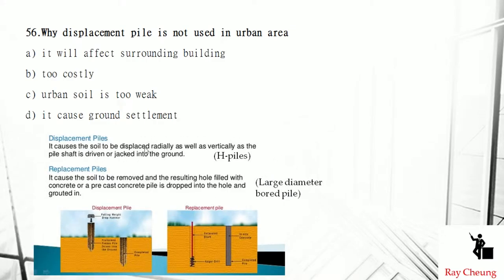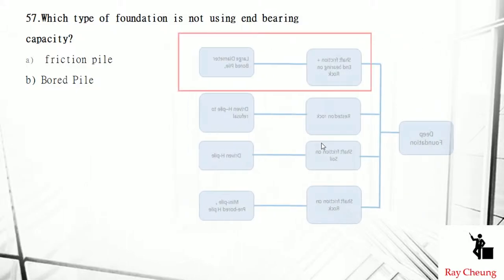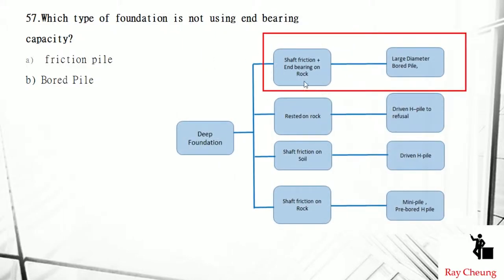You need to understand that a displacement pile is something like the H-pile. A replacement pile is where you take out the soil and replace it with concrete — it's called a replacement pile, like the bored pile. The H-pile during driving will affect surrounding buildings by generating noise and also causing settlements. In Hong Kong nowadays, end-bearing is normally for large-diameter bored piles only. If you say a friction pile like the H-pile, it just drives into the soil and will not stay in end-bearing. That's why A should be chosen.